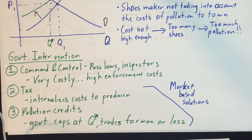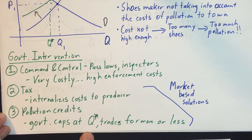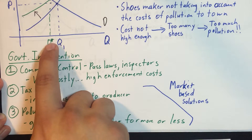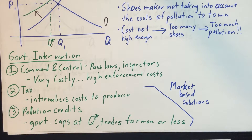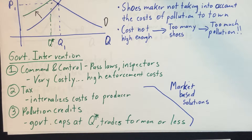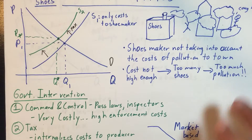The third solution is pollution credits. The government caps total production at Q* and lets companies trade pollution credits among themselves. For instance, if one type of shoe requires more pollution to produce, that factory can buy more pollution credits from another — leading to a more efficient outcome.